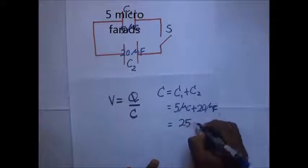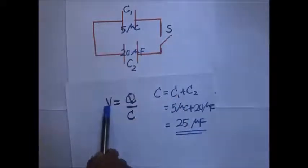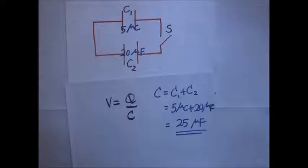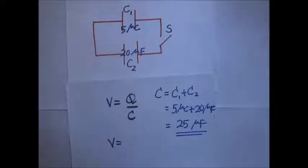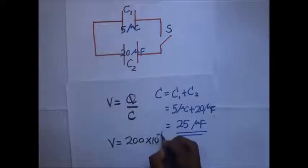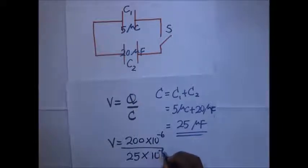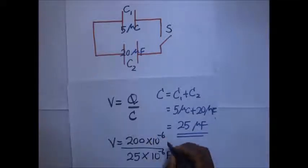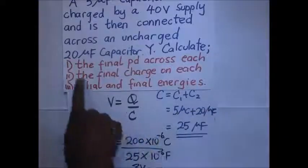Now we can find the potential difference across each capacitor. V equals Q over C: that is 200 × 10⁻⁶ coulombs divided by 25 × 10⁻⁶ farads, giving us 8 volts. So the final potential difference across each capacitor is 8 volts.